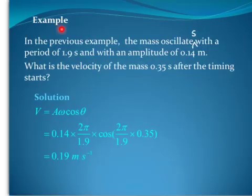The example here says, in the previous example, the mass oscillates with a period of 1.9 seconds, an amplitude of 0.14 meters. What is the velocity of the mass 0.35 seconds after timing starts? Just use that formula, and you will get the answer.